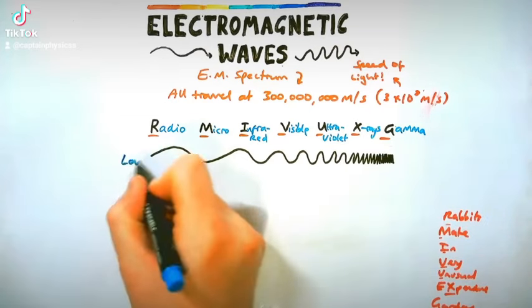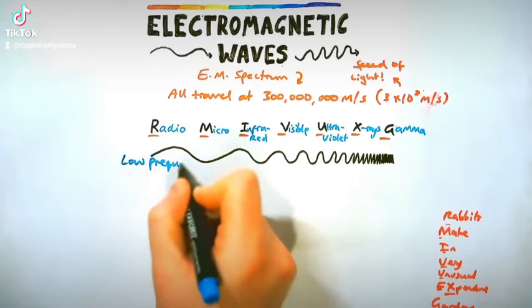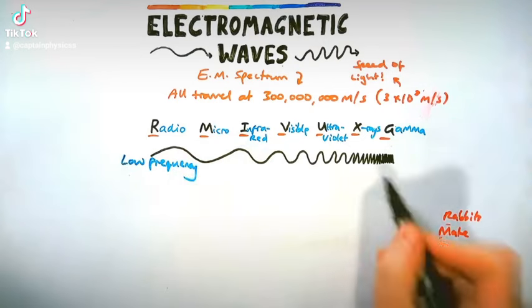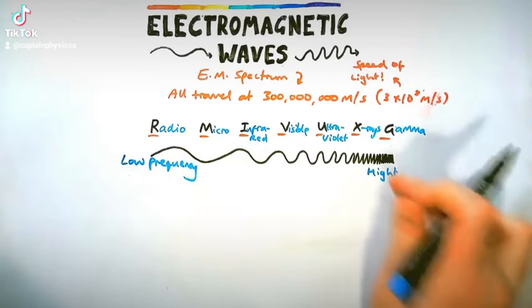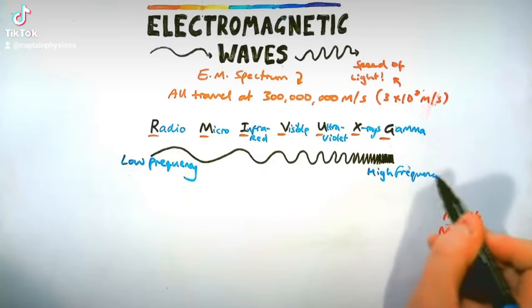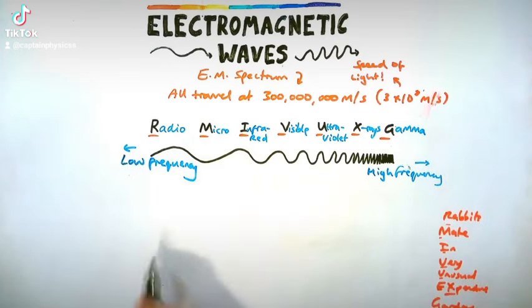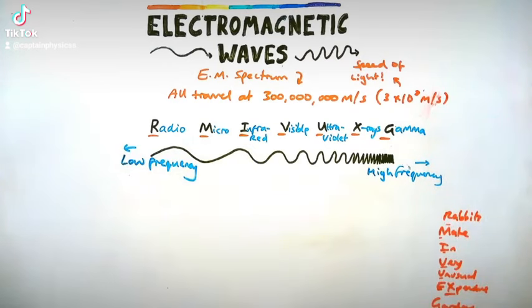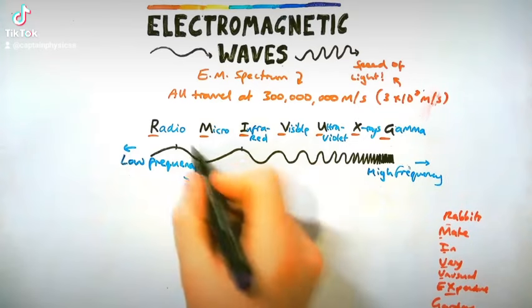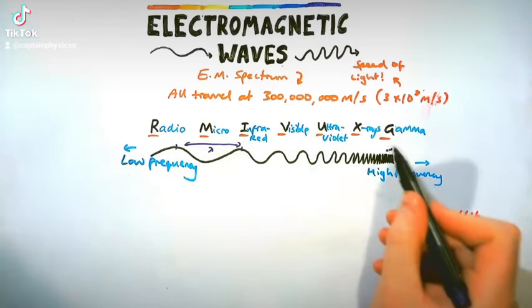Next thing to talk about is if you have a look at the diagram, which part of the spectrum has the lowest and highest frequency? So frequency is the number of waves per second. And hopefully we can see that the radio waves have the lowest number of waves in a certain time, whereas the gamma waves, you've got all those waves bunched together.